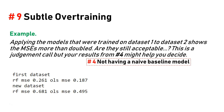Example: applying the model trained on dataset one to dataset two shows the mean squared error more than doubled. Is that still acceptable? This is a judgment call, but your result from mistake number four — not having any baseline model — might help you decide.